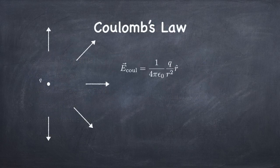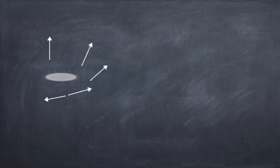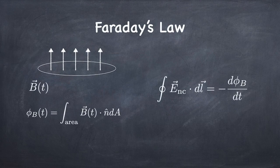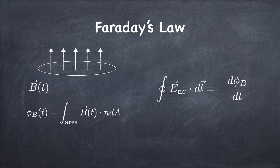Coulomb's law is just 1/r-squared, proportional to r-hat and the charge. Faraday's law is produced by a changing flux: you calculate the magnetic flux through some area, and if that flux changes in time, it produces a curly or non-Coulomb electric field. The EMF associated with that field — the integral of the electric field around a closed loop — is proportional to the rate of change of the magnetic flux through that loop. That's Faraday's law.